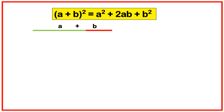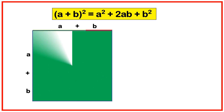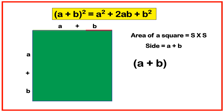The side of the square will be a plus b. The area of a square is equal to side into side, so the area is equal to a plus b into a plus b, which is equal to a plus b whole square.